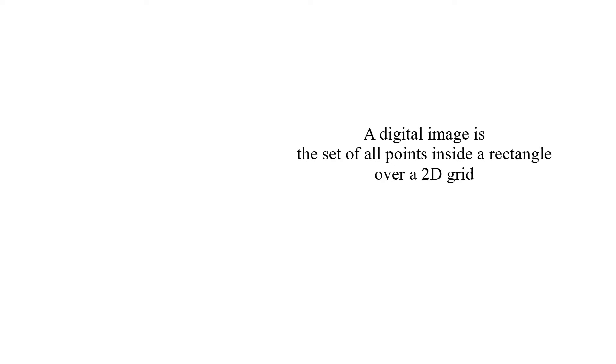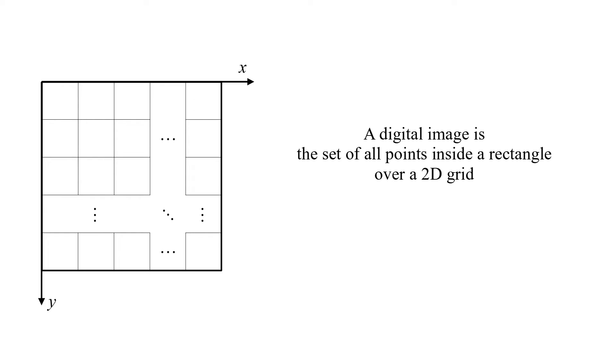A digital image is the set of all points inside a rectangle over a 2D grid. An image point is called pixel, meaning picture element.